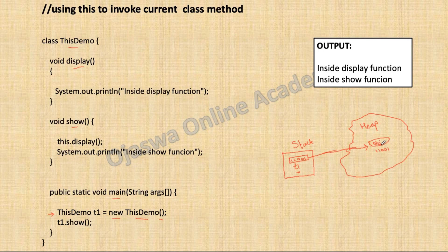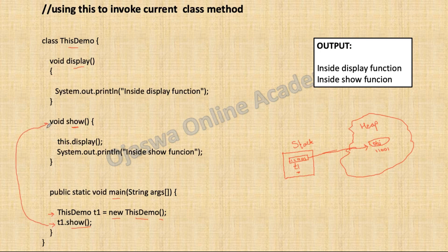There are no instance variables in our program, so no instance variables are allocated inside the object — the object does not have any data. We haven't written a constructor in our class, so the compiler will include the default constructor on our behalf. The next statement gives a call to the show method. Show is a non-static method, so we invoke it using an object: t1.show. From here, control goes to the show method.